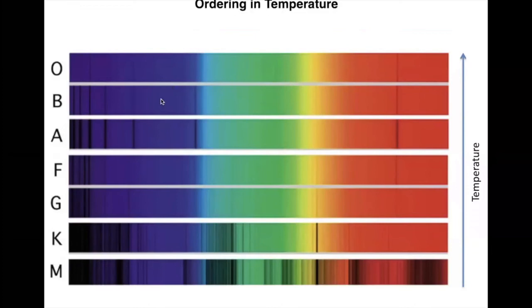So it was Annie Jump Cannon that simplified the system and grouped them as a series of decreasing temperature as OBAFGKM as we have nowadays.